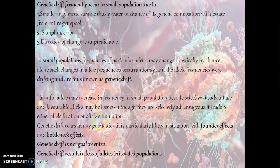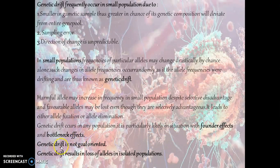Genetic drift leads to either allele fixation or allele elimination. Genetic drift can occur in any population, but it is particularly likely in situations involving the founder effect and the bottleneck effect. Genetic drift is not goal-oriented, and it results in loss of alleles in isolated populations.